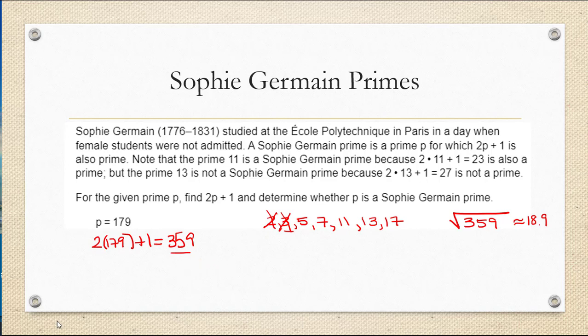Now 5 definitely is not a factor of 359 since it doesn't end in a 0 or a 5. And that brings us to 7. When we divide 359 by 7, we get a remainder of 2. So it's not a divisor of 359.